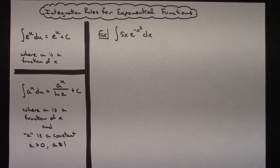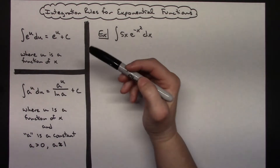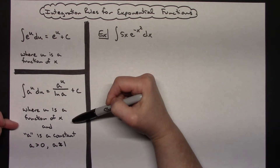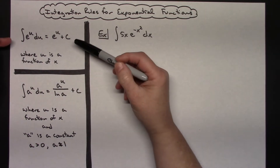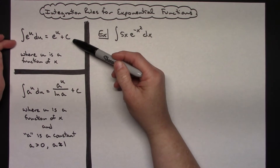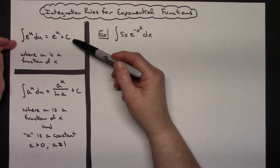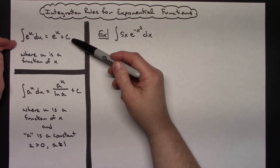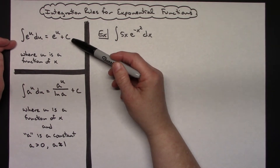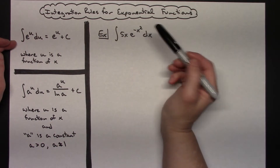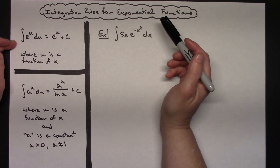Today we're going to take a look at some integration rules for our exponential functions. I've got a couple of them written out over here on the left. Let's say we are trying to integrate e to the u du, where u is going to be a function of x. When we integrate that, it will end up being e to the u plus c, and you are going to have to do a u substitution, probably letting your exponent be what you let u be.